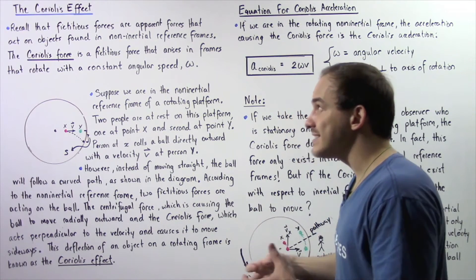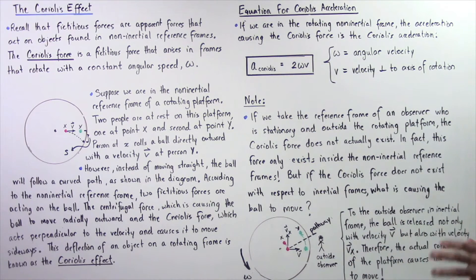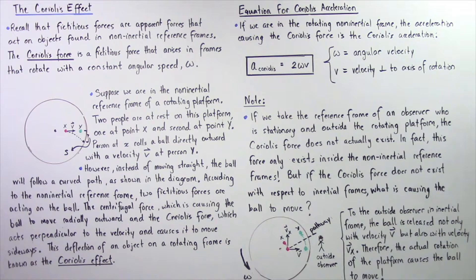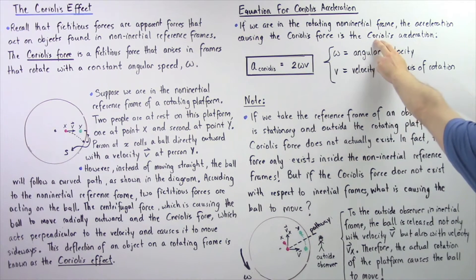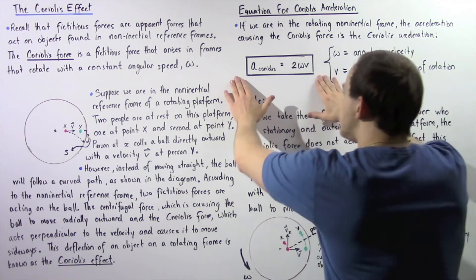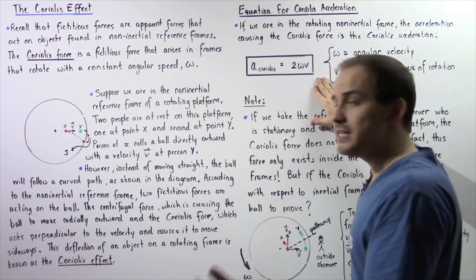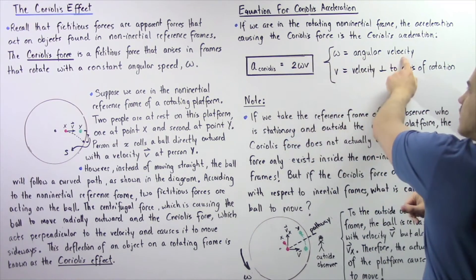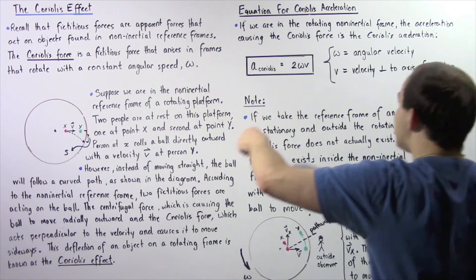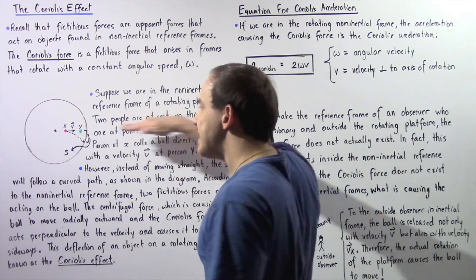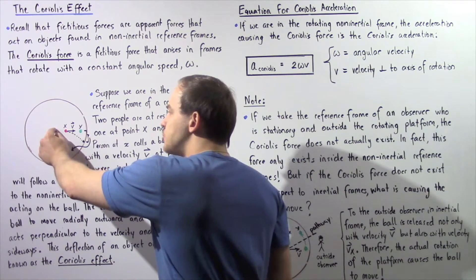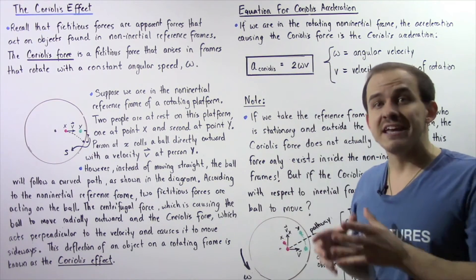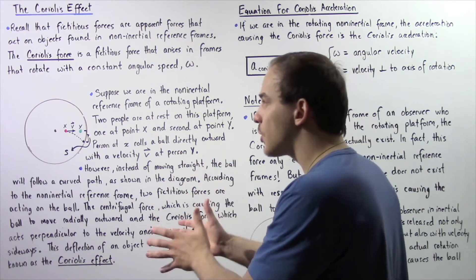The Coriolis force itself is essentially formed by the Coriolis acceleration. If we are inside the rotating non-inertial frame, the acceleration causing the Coriolis force is known as the Coriolis acceleration, and it's given by an equation we're going to derive in the next lecture. The Coriolis acceleration is equal to 2 times omega — the angular velocity of our rotating platform — multiplied by v, the velocity that is perpendicular with respect to the axis of rotation, which is pointing out of the board. This equation only works if we're actually inside the non-inertial reference frame.